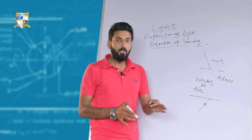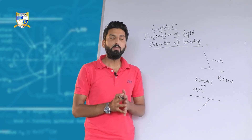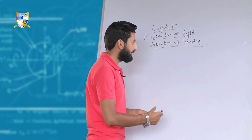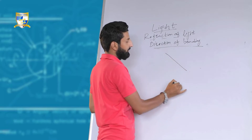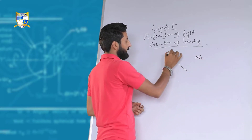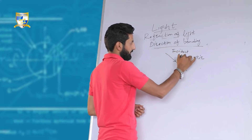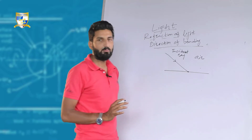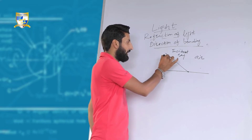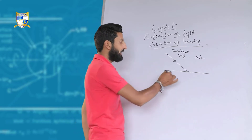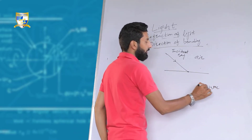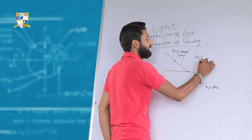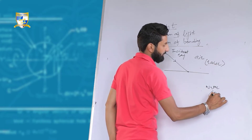Where would the ray get deviated? What would be the direction of bending of light? For example, light is traveling from air — this is the incident ray — and here is the surface of water. It is entering the surface of water at a point known as the point of incidence. A ray of light is coming from air and entering into water. Air is rarer in comparison to water, so the speed of light is more in air than in water — air is rarer medium and water is denser medium.